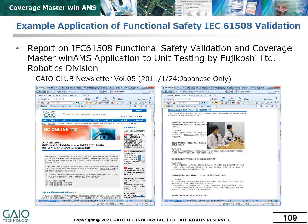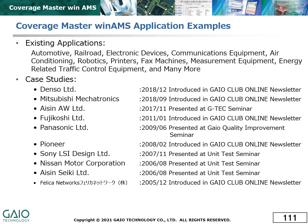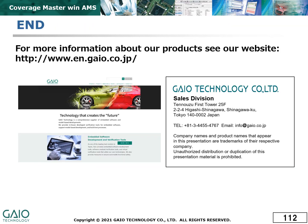Our website includes many reports of applications of CoverageMaster WinAMS to functional safety unit testing by various organizations, and CoverageMaster WinAMS has a considerable history behind it. This is a short list of just some of the many manufacturers and industries where CoverageMaster WinAMS has proven itself. More information on the full range of test tools from Gaio Technology can be found on our website. Thank you for your time and attention.